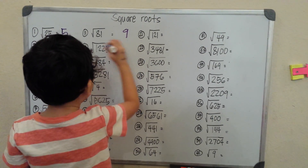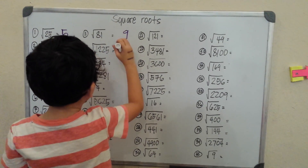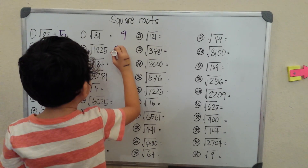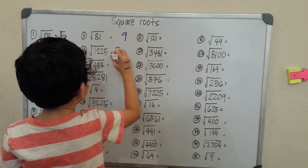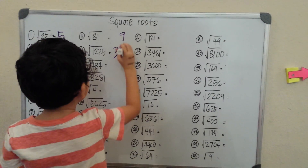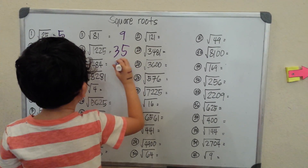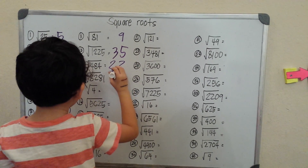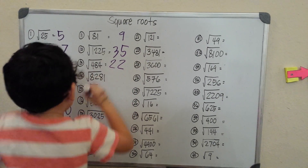Square root of 1225 is 35, square root of 484 is 22, square root of 8 is 2.